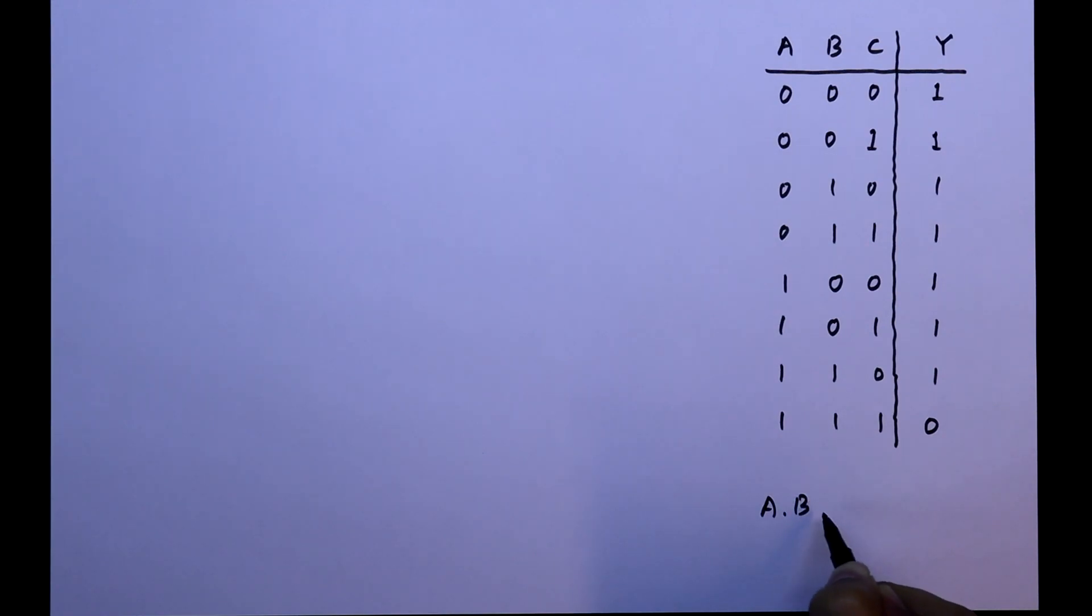So, we can write it as A dot B dot C whole bar equal to Y. Now we will see the practical circuit.